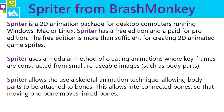Spriter uses a modular method of creating animations where you construct animations made up of body parts. It can be done very quickly using key frames — you just create the key frames and Spriter will tween and fill in the gaps. You can even use a skeletal animation technique similar to rigging characters in 3D animation, where bones are connected so that when you move one bone the other moves along with it. We're going to use Spriter to create a simple Flappy Bird for this tutorial.